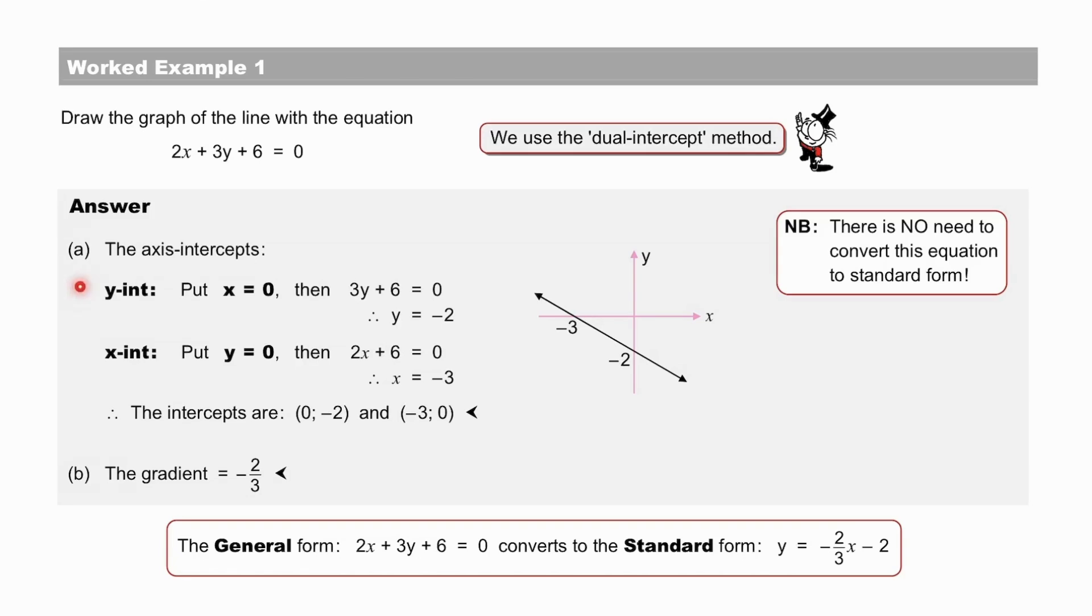To find the y-intercept, we simply put x equal to 0, to find y equal to minus 2. To find the x-intercept, we simply put y equal to 0, and we find x equals minus 3. The gradient is easily read off the graph as being equal to minus 2 thirds. By the way, the general form 2x plus 3y plus 6 equal to 0 converts to the standard form y equals minus 2 thirds x minus 2. Even though we didn't need to do that, it is interesting to confirm your sketch against this form too, so that you grow in confidence, no matter what the given form is of the graph that you need to draw. Pause to check your method.